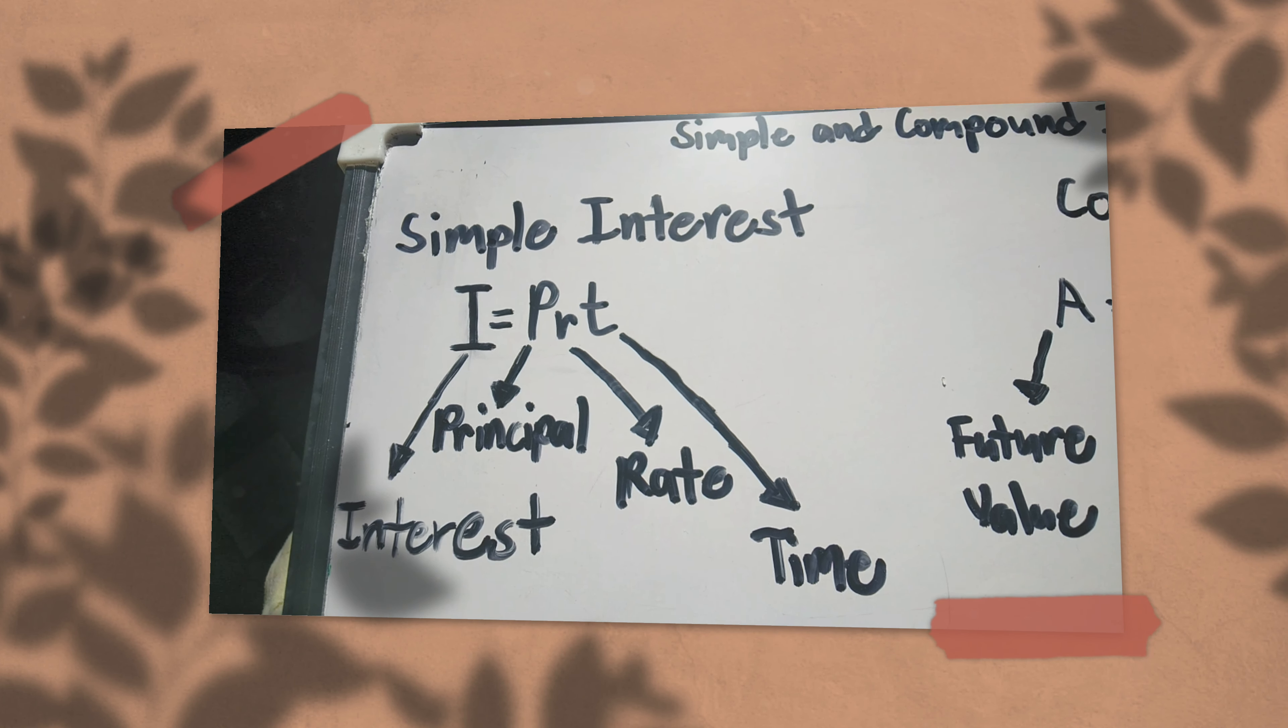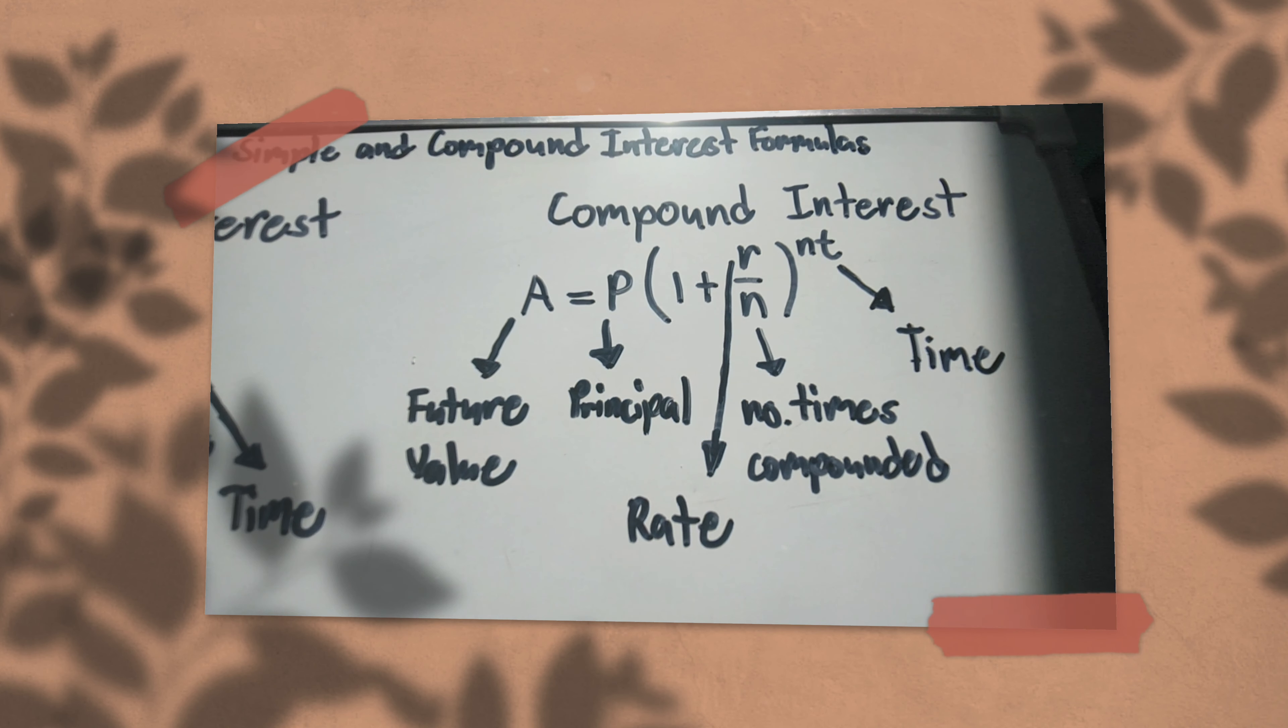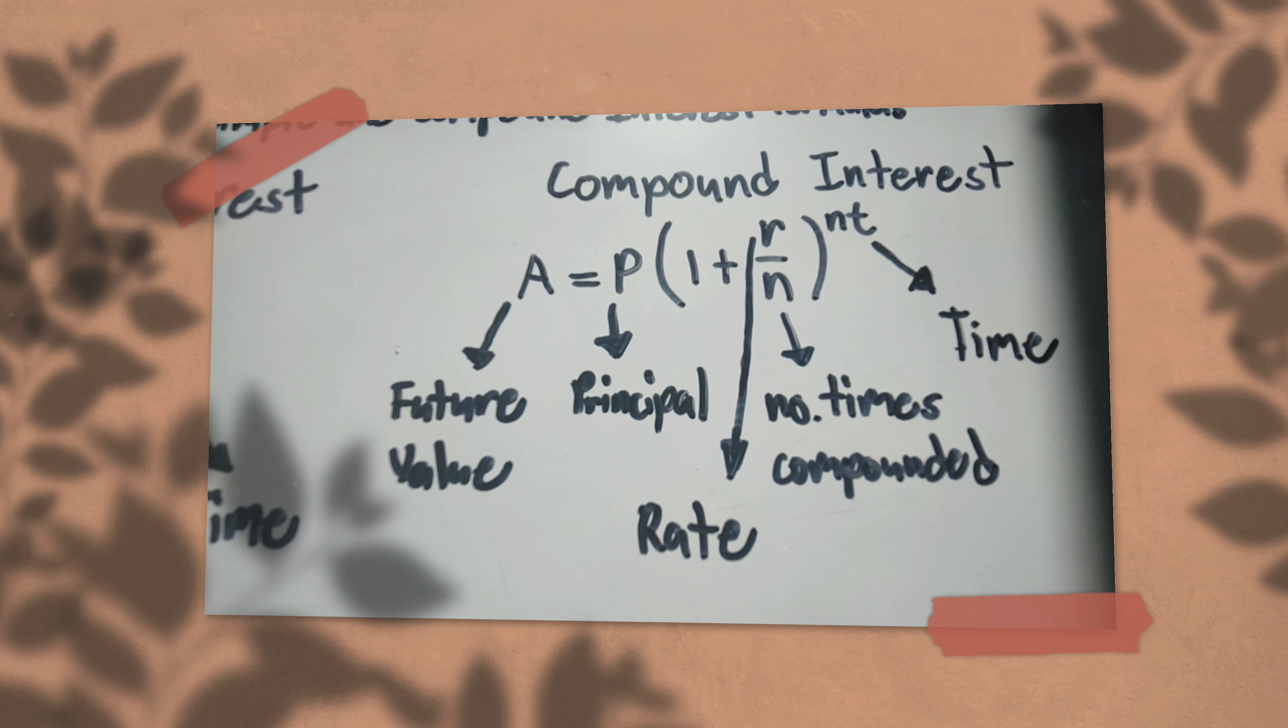You convert this to decimal. For example, 10% becomes 0.1, and so on. Then time - this is how long, it could be 3 years, 4 years, 5 years, and so on and so forth.